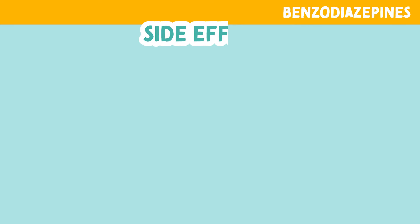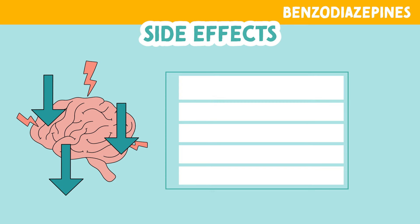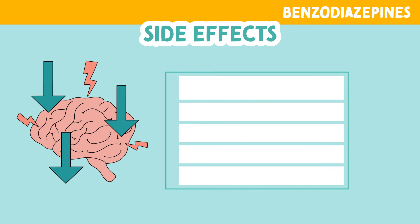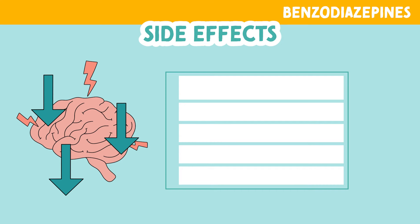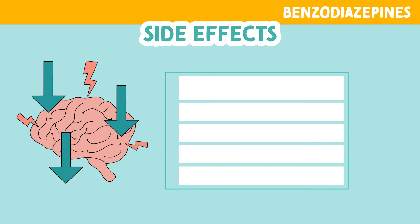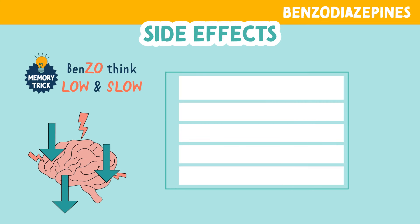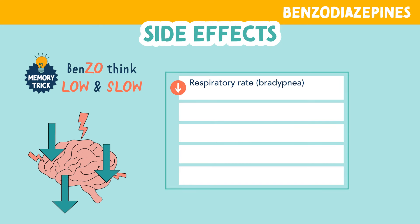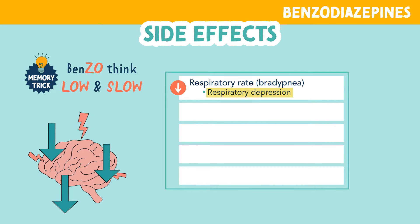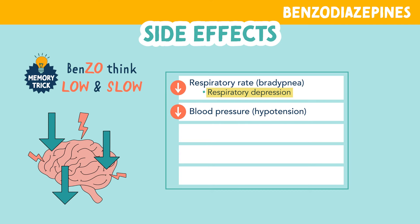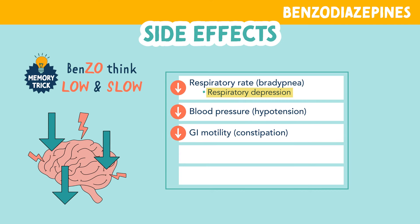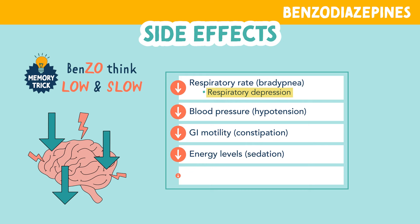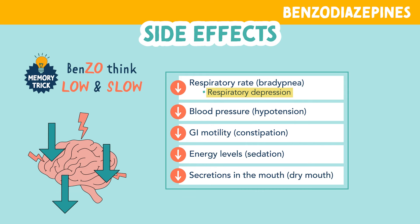Let's review some of the must-know side effects of benzodiazepines. Since these drugs depress the central nervous system, we need to watch for depressed activity everywhere else in the body. You can remember the effects of this drug by thinking: benzos — think low and slow. This includes a decreased respiratory rate, also called bradypnea, and can sometimes lead to respiratory depression. We also have decreased blood pressure or hypotension, decreased GI motility which can lead to constipation, decreased energy levels which can lead to sedation, and decreased secretions in the mouth causing dry mouth.